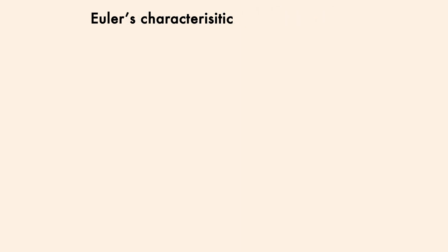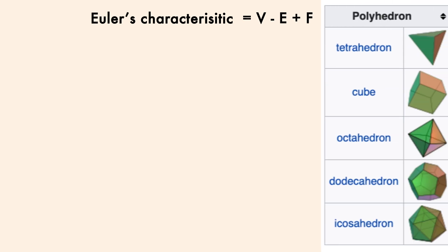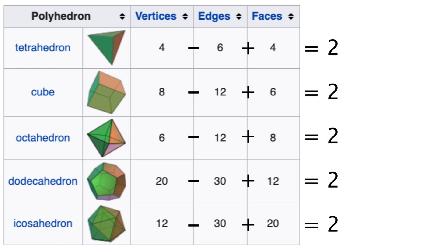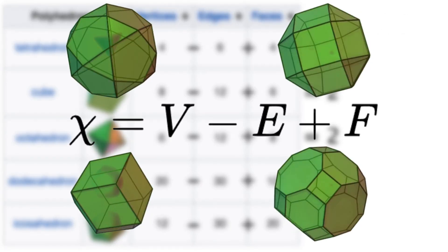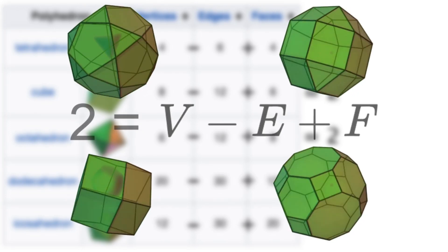Now in the last video, I said that Euler's characteristic for a 3D shape is determined by calculating the vertices minus edges plus faces. And as we saw, that value for all the platonic solids comes out to 2. But it turns out that no matter what convex polyhedron you have, regular or not, Euler's characteristic will always be 2.